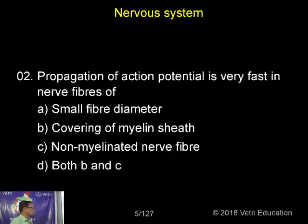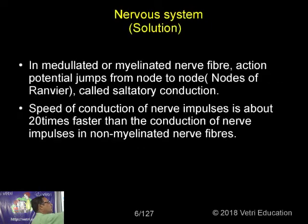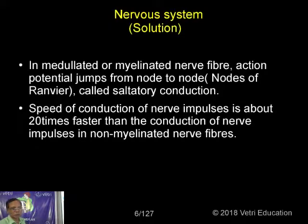We have two types of nerve fibers: one myelinated nerve fiber with myelin sheath, and another non-myelinated nerve fiber without myelin sheath.